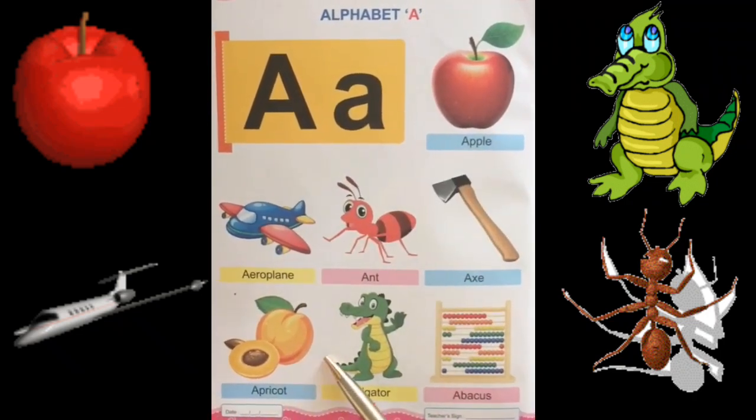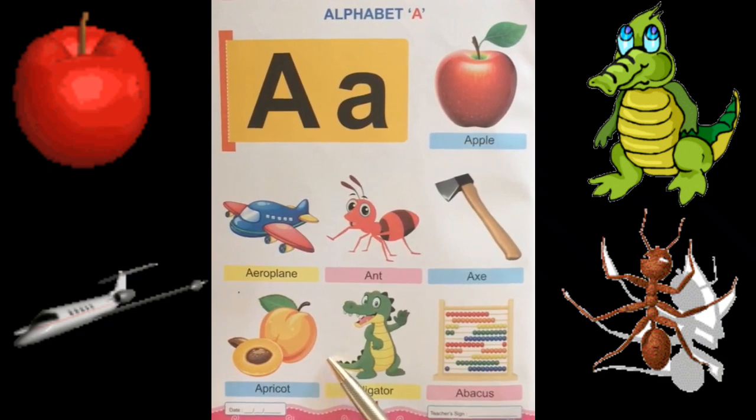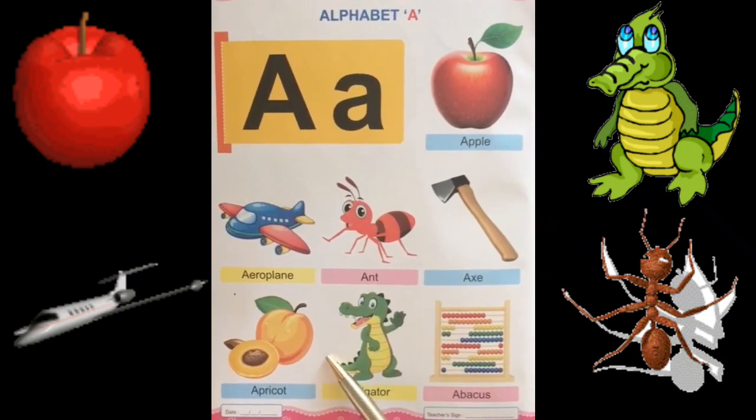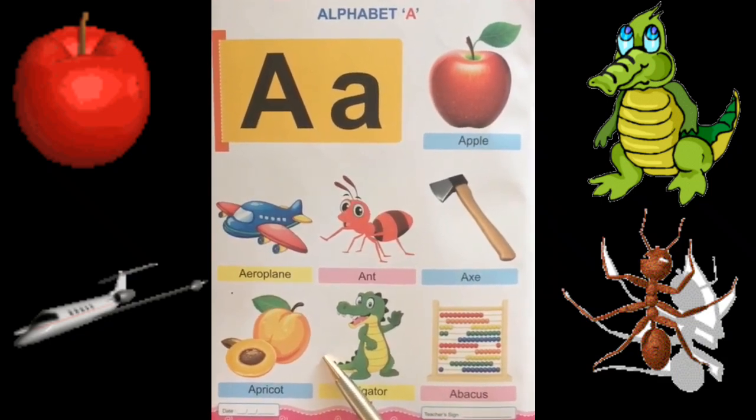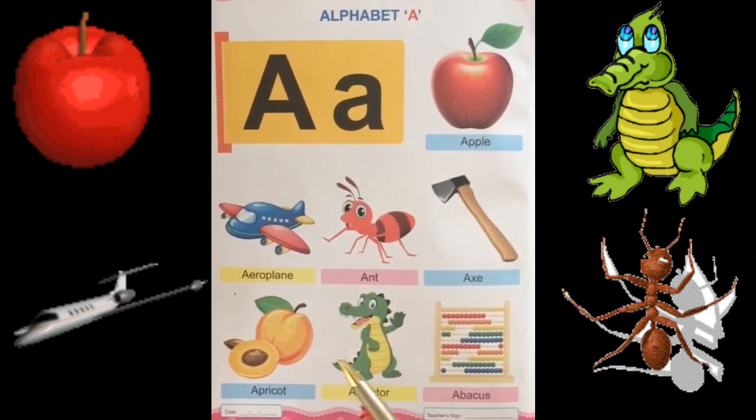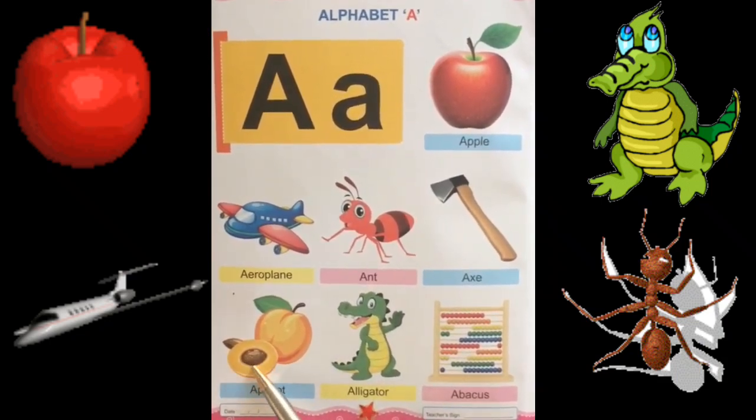Apricot. Apricot is a fruit. It has a seed. Ismeh seed hota hai.